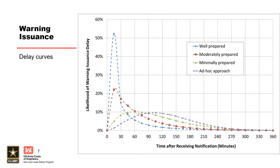They also provided quantitative estimates so we can add this into our modeling — with a certain amount of time, how many people are going to get warned and might get out of the way. They gave us four curves for warning delay time. Based on case histories where they knew whether emergency managers were well prepared or not, they developed these curves. This was our starting point for what we now use in LifeSim.